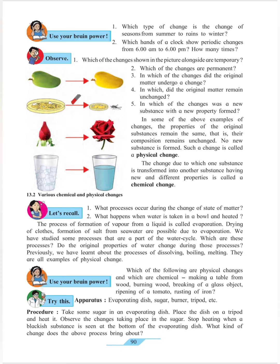Now we come to the main point: physical change and chemical change. When no new substance is formed, such a change is called a physical change — the object itself is not changed at all. The change due to which one substance is transformed into another substance with new and different properties is called a chemical change. Examples of physical change include melting, freezing, and boiling of water. Burning of coal, rusting, and digestion of food are examples of chemical change.